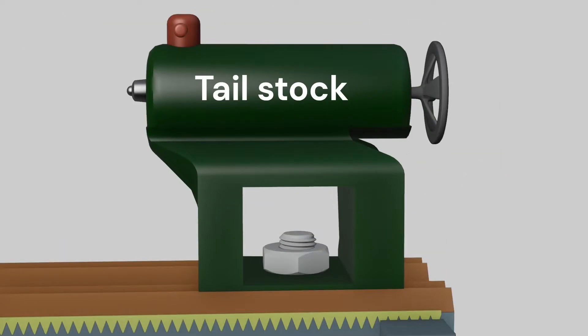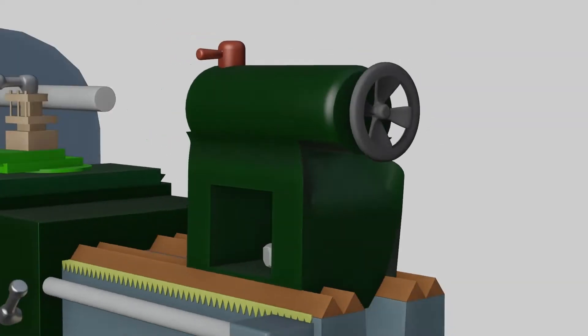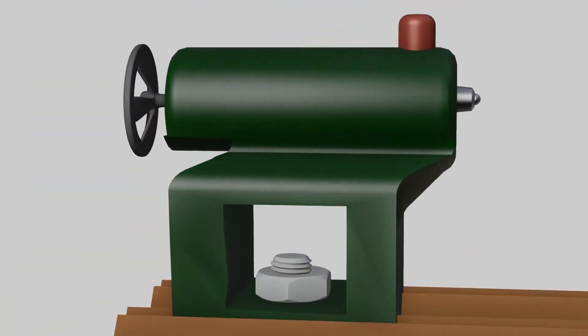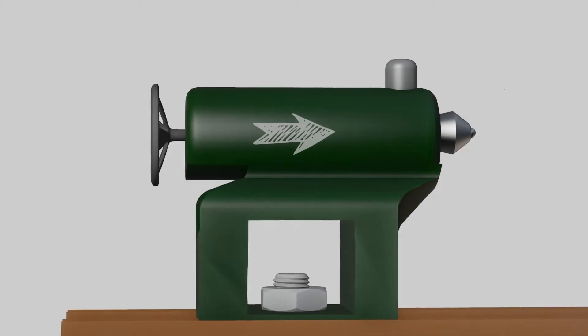Tailstock is used to secure and support the free end of a workpiece while it is being machined. Tailstock can move towards the headstock.